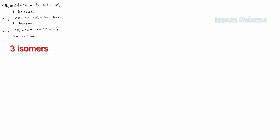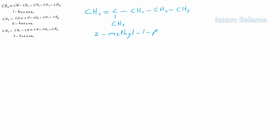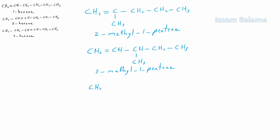What if we start drawing five carbon atom chain alkenes with the double bond at the first carbon? Since we cannot place the methyl at the first and the last carbons, we end up with three possibilities: either place the methyl at the second carbon like this — called 2-methyl-1-pentene — or add the methyl at the third carbon — called 3-methyl-1-pentene — or add the methyl at the fourth carbon — called 4-methyl-1-pentene.